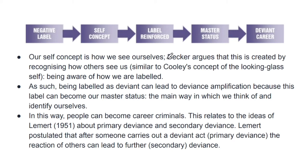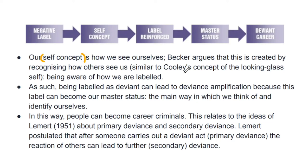Our self-concept is how we see ourselves. Becker argues that this is created by recognizing how others see us. We studied the concept of 'looking glass self' — that how others see us is how we see ourselves. We try to see ourselves from others' perspectives. Becker has used this same idea here. Being aware of how we are labeled is how we see our self. As such, being labeled as deviant can lead to deviant self-identification because this label can become our master status.